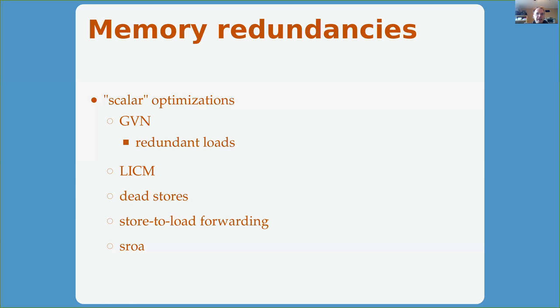Moving beyond inlining to memory redundancies — this is a big task, split into many categories: GVN, redundant load elimination, LICM, dead store elimination, store-to-load forwarding, SROA (scalar replacement of aggregates), register promotion. These are all essentially names for the same thing: getting rid of redundant loads and stores, holding values in registers more, and avoiding doing the same load multiple times or stores we don't need. Even in LLVM's optimizer, about six or seven passes are basically doing the same version of GVN in specialized forms.